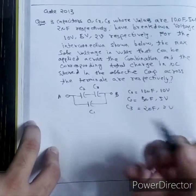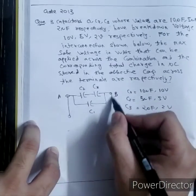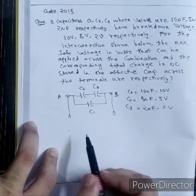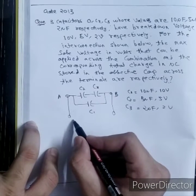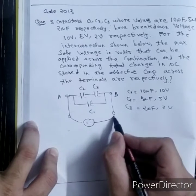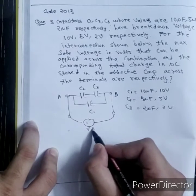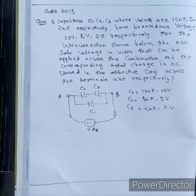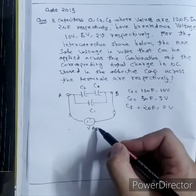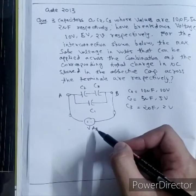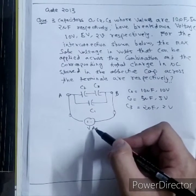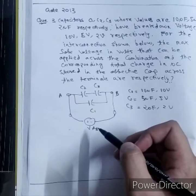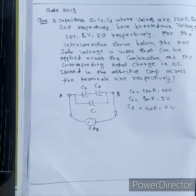What the question says is, these are two terminals A and B. I need to find the safe voltage which I can apply between A and B such that all the capacitors do not go to breakdown. What is the maximum safe voltage I can apply here such that all the capacitors should not go to breakdown? Let's see how to solve.